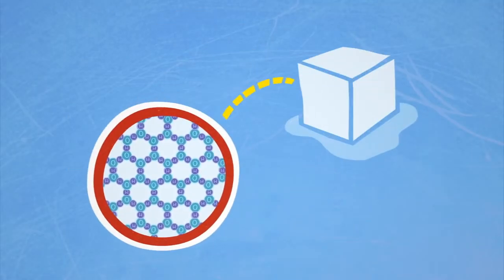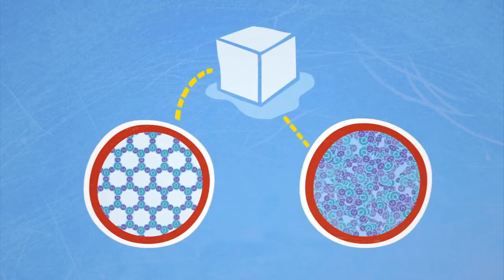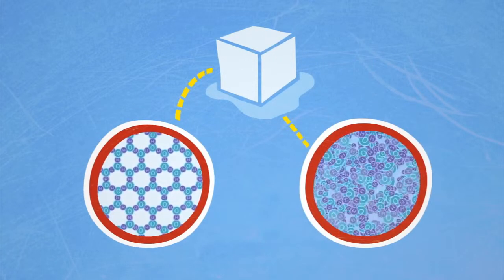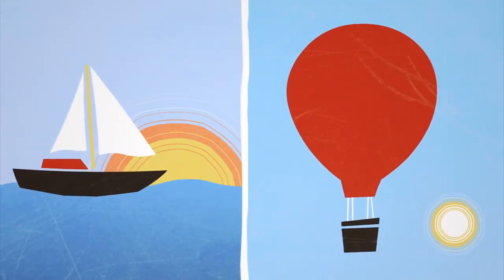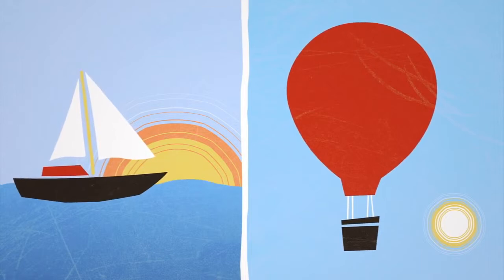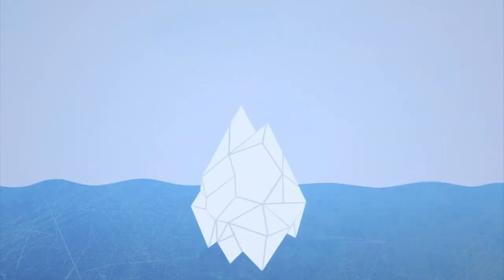This is what solid water, ice, looks like on the molecular level. Notice that the ordered hexagonal structure is less dense than the disordered structure of liquid water. And you know that if an object is less dense than the fluid it's in, it will float. So ice floats on water.